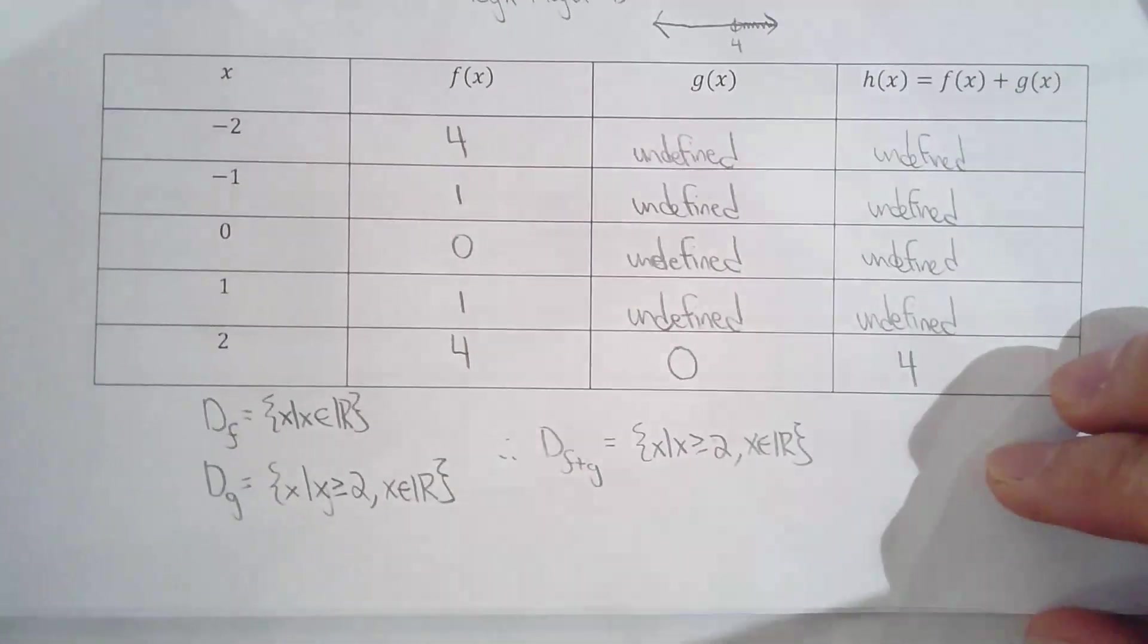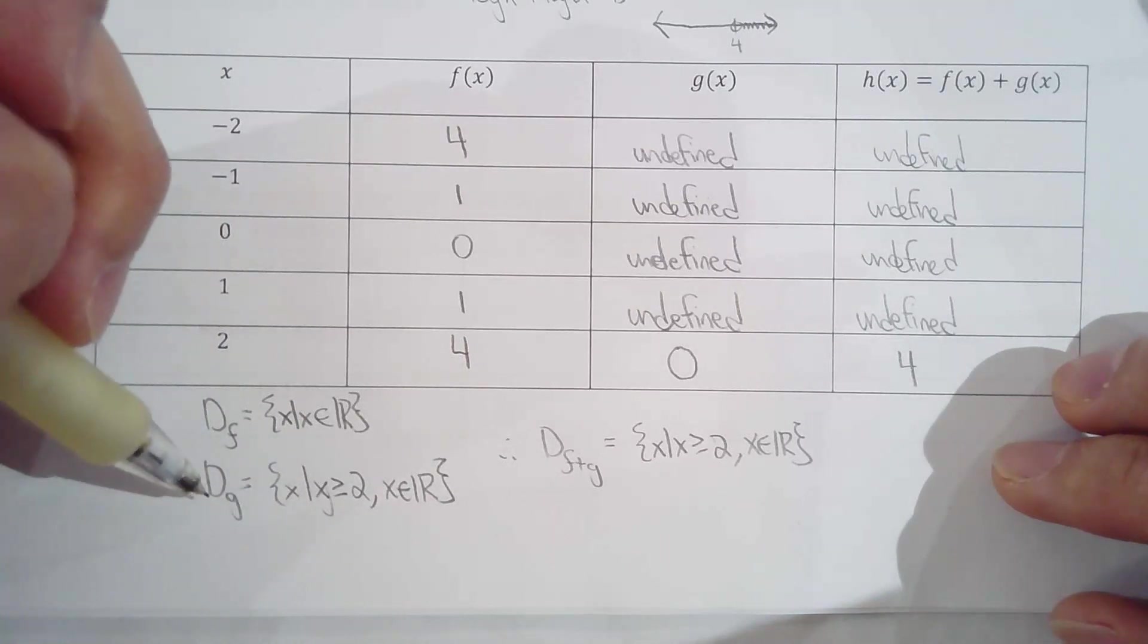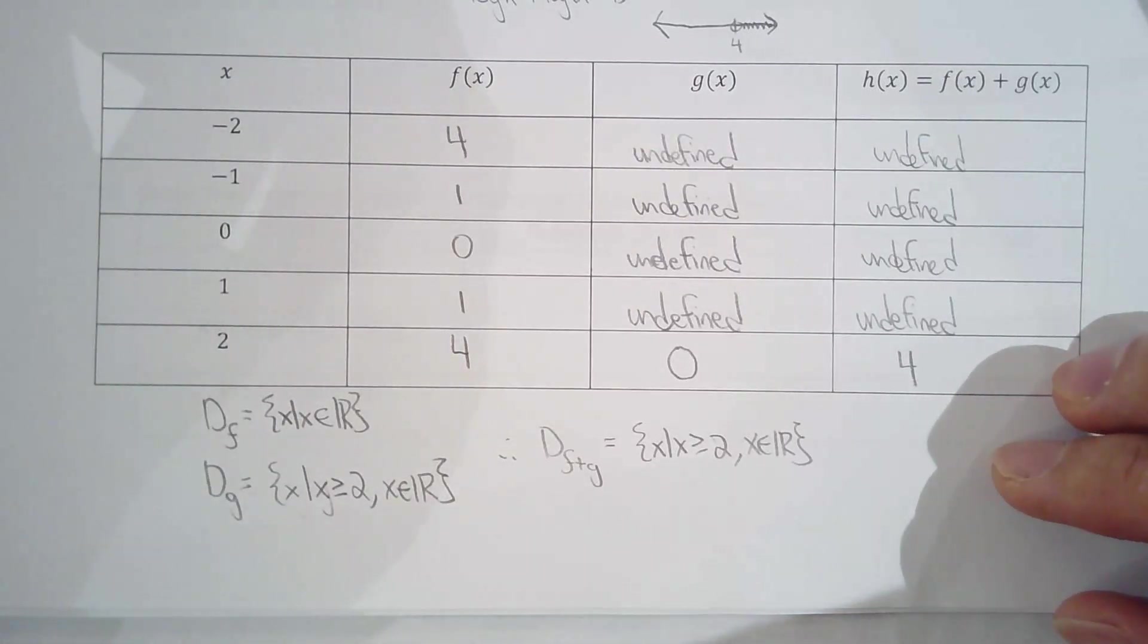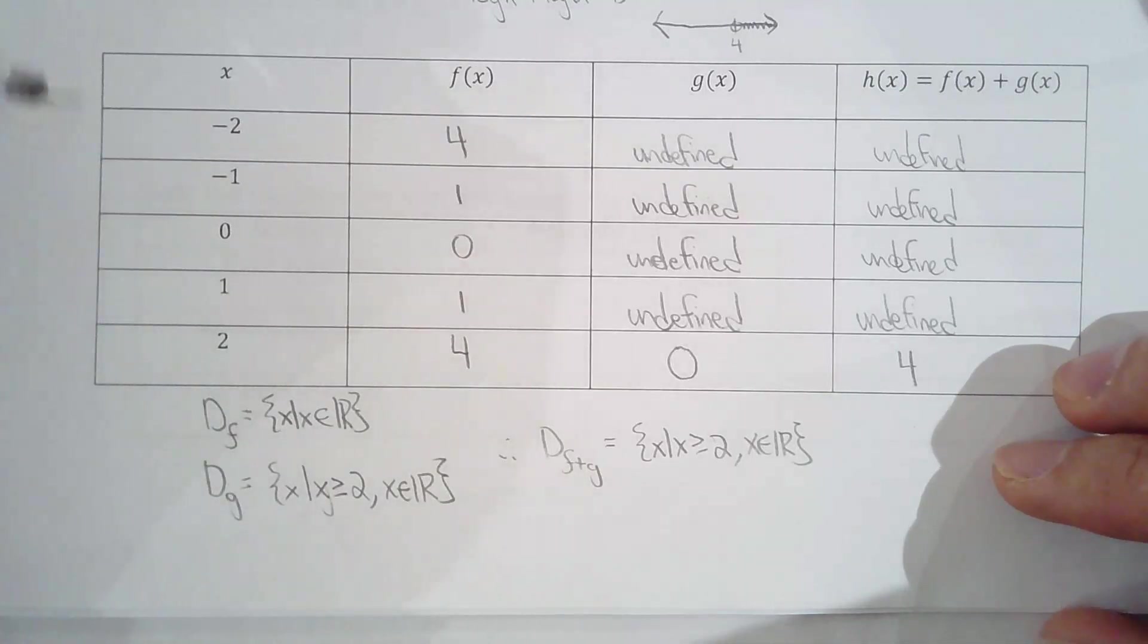That's how you find the domain of a sum of two functions or a difference of two functions. You take a look at the domain of the individual functions and find out the common elements, where the domains overlap. What are the common elements? In this case, the common elements are values of x which are greater than or equal to 2. It makes sense to say common elements because if one of the functions is undefined, then the sum is also undefined. So you have to look at where both functions, f and g in this case, are defined.